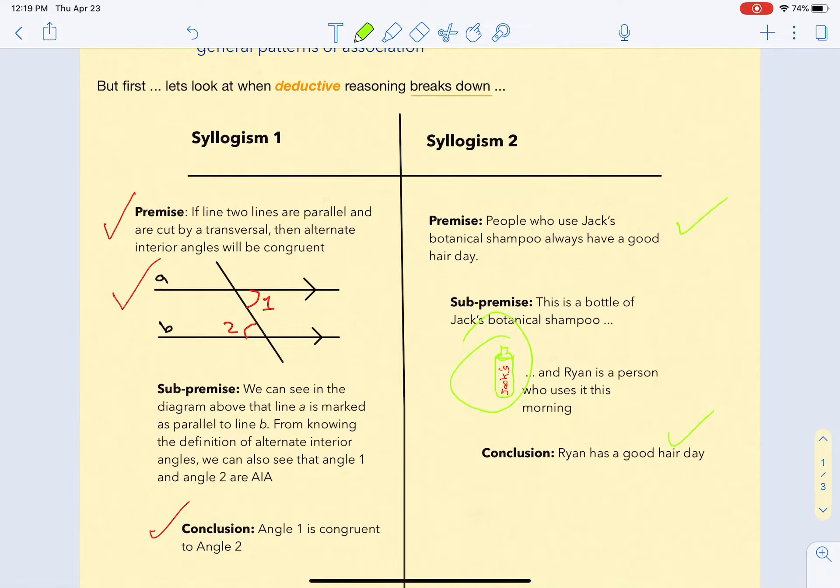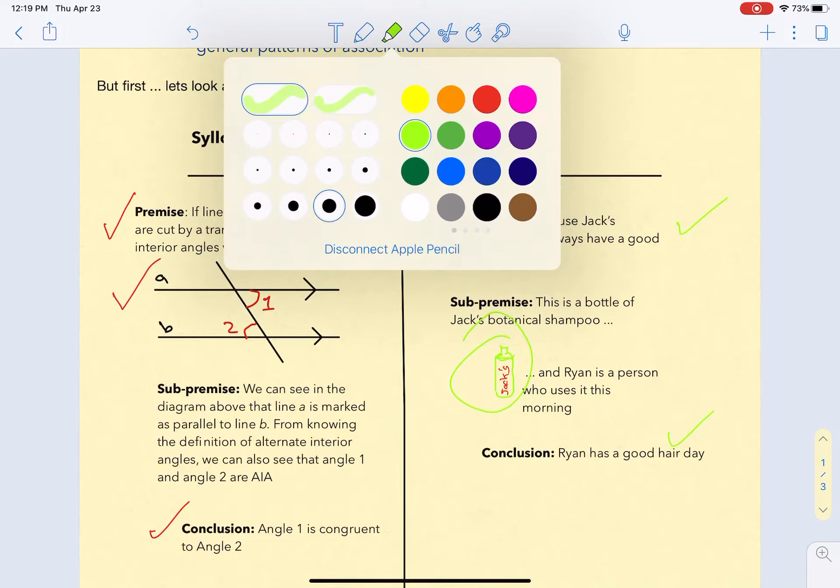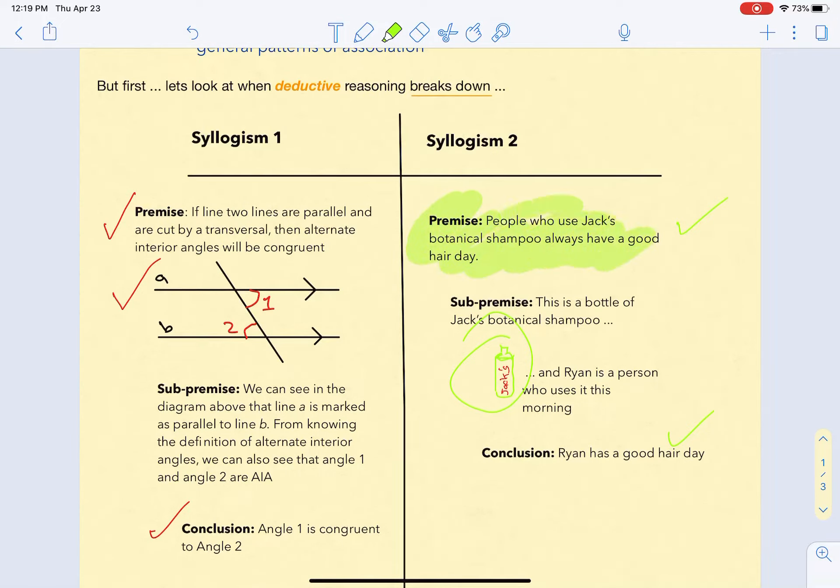I want you to think about which of these syllogisms, which of these deductive reasoning patterns, seems most trustworthy to you. Maybe less straightforward is why. Why is it that one of these deductive reasoning patterns breaks down? The spot where it breaks down is here: 'People who use Jack's Botanical Shampoo always have a good hair day.'